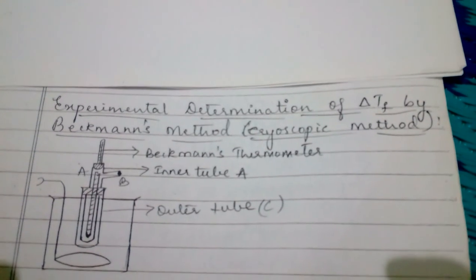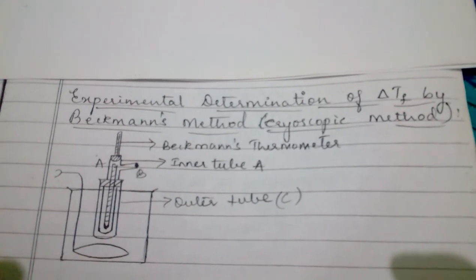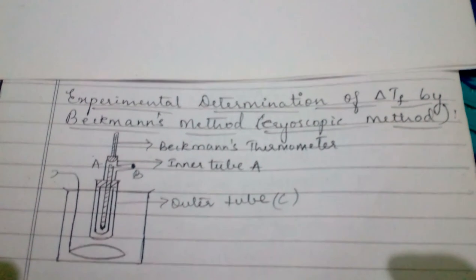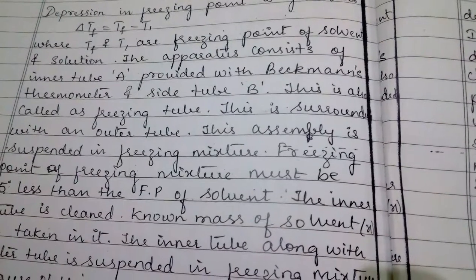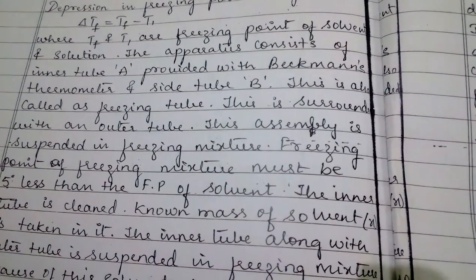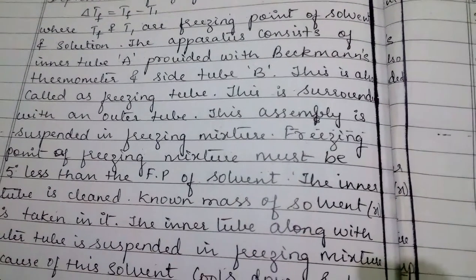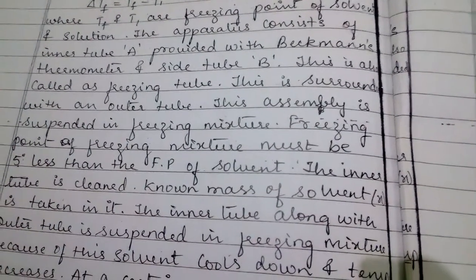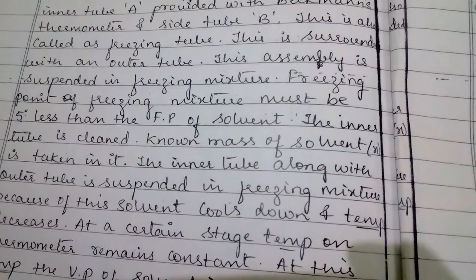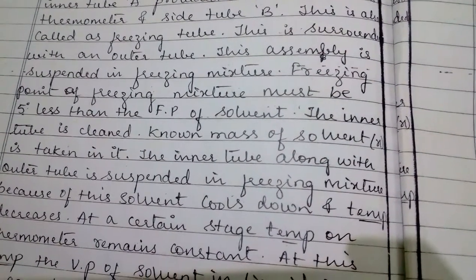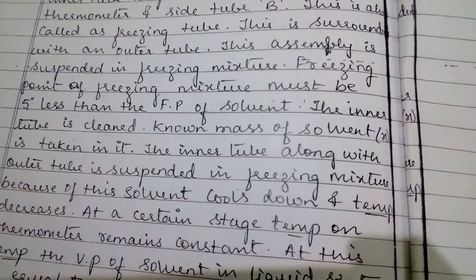This is the diagram of Beckmann's tube. Outer tube C, inner tube A, Beckmann's thermometer. Depression in freezing point is given as delta Tf equals Tf minus T1, where Tf and T1 are the freezing points of solvent and solution. The apparatus consists of inner tube A provided with Beckmann's thermometer and side tube B, also called the freezing tube. This is suspended within an outer tube, and the assembly is suspended in a freezing mixture. The freezing point of the freezing mixture must be 5% less than the freezing point of the solvent.